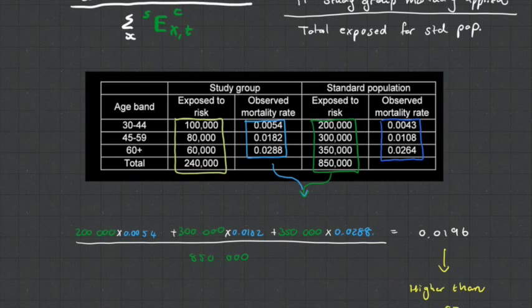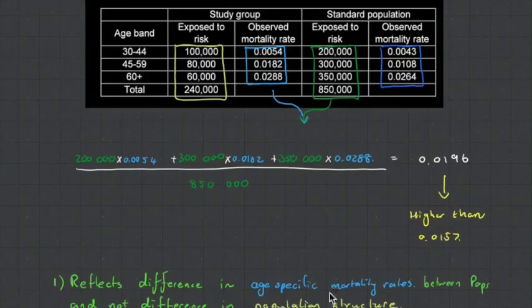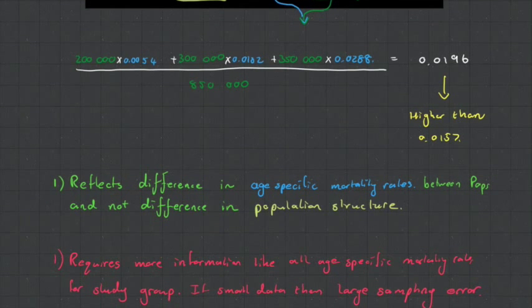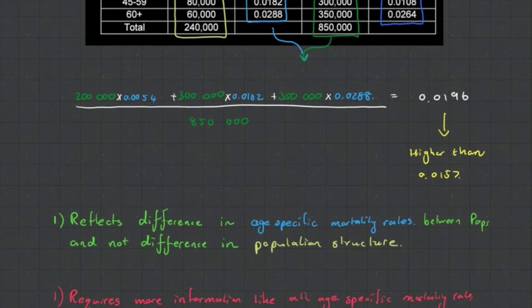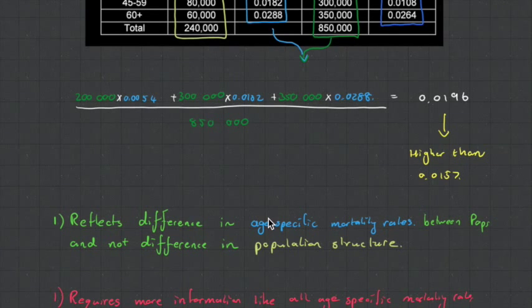Now why don't we just use this? It's great, it reflects the differences in the age specific mortality rates, and not the difference in the population structure, which we're not that interested in. The problem though is that this requires more information, as you're going to be needing the mortality rate at every single age, which you may not have. So how do you get around this?